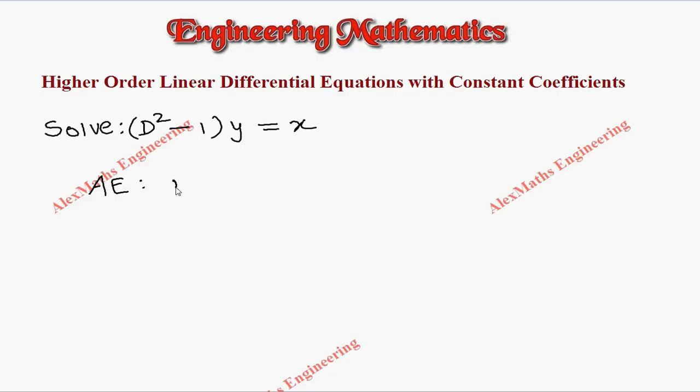The auxiliary equation is m² - 1 = 0. From this, m² = 1, and the value of m is ±1. So we have two real values and they are different values.